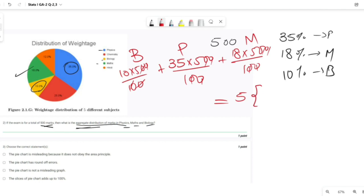So 5 times 18 plus 35 plus 10, which gives you 5 multiplied by 63, which equals 315. So the answer to second question is 315 marks.